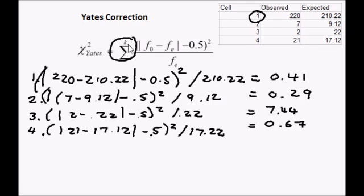The final step is this summation. So I am going to add all of these numbers up and when I do that I get 8.81.